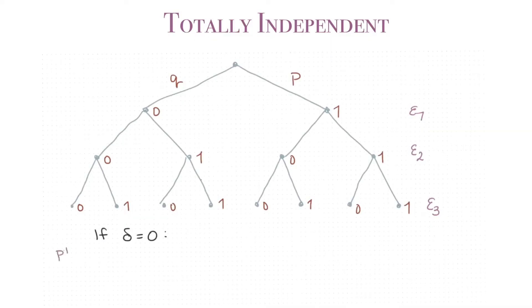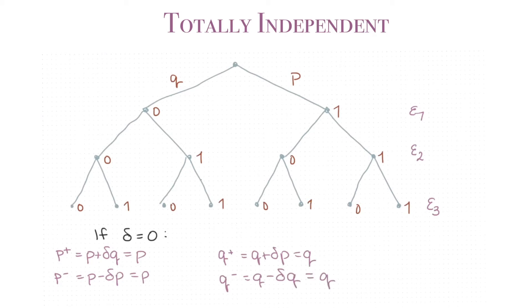At the other extreme, if delta equals 0, then P+ and Q- return to their original P and Q. The tree looks exactly like it used to under independence. So at delta = 0 we have complete independence — successive coin flips where the outcome of each doesn't care what happened before. Delta can range between 0 and 1, where 0 is full independence and 1 is full determinism after the first outcome, giving us everything in between.